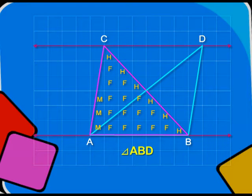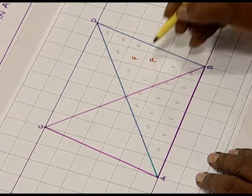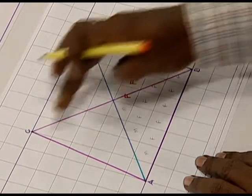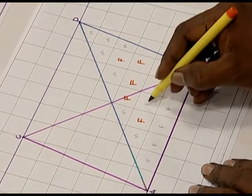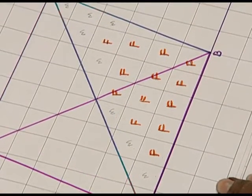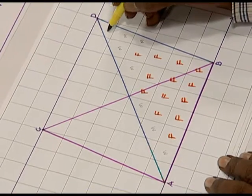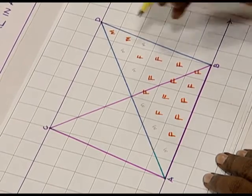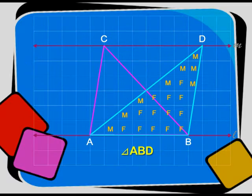Similarly, we mark the squares on triangle ABD. The fully covered squares are counted — there are 13 fully covered squares marked F. The squares covered more than half are marked M, and there are 8 such squares. In this diagram there are no squares which are exactly half covered, and squares less than half covered are ignored.